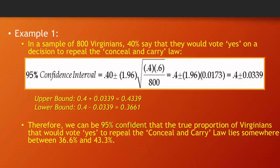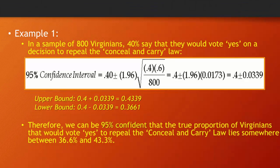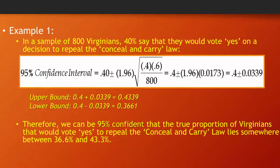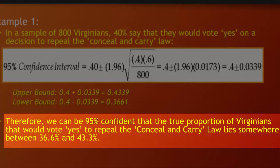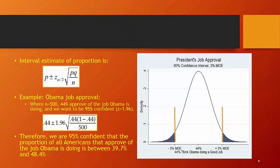And we can then calculate an upper bound and a lower bound estimate. The upper bound is 0.4 plus 0.0339, which is our margin of error, and our lower bound is 0.4 minus 0.0339. Our lower bound of 0.3661 and our upper bound of 0.4339 allows us to make a statement that we could be 95% confident that the true proportion of Virginians that would vote yes to repeal the conceal and carry law lies somewhere between 36.6% and 43.3%.